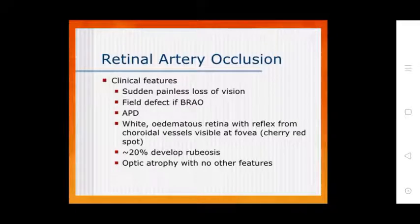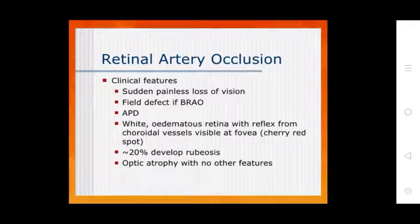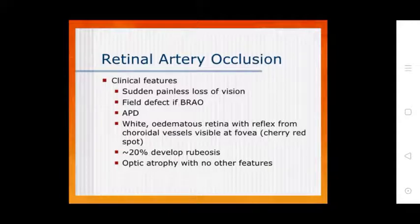Clinical features of retinal artery occlusion (RAO) include: sudden painless loss of vision, visual field defect, afferent pupillary defect (APD), white edematous retina, visible amphibia series and spots, and 20% develop fibrosis and optic atrophy with no other features.